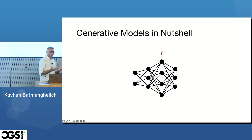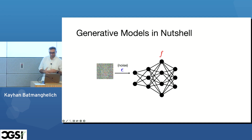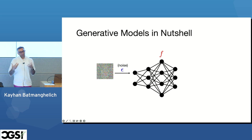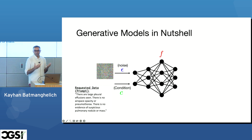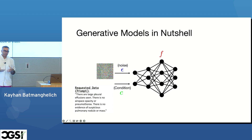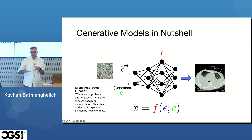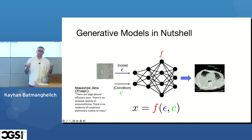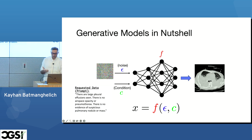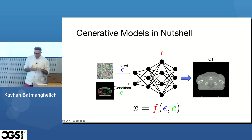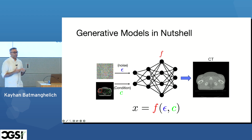I won't go into too much detail about how generative models work, but the overall idea is that you have exogenous noise from some canonical distribution fed into a neural network along with some optional condition — for example, a text prompt. The model synthesizes an image from these inputs. The condition is flexible: it can be a text prompt or another image. For modality imputation, for instance, another image serves as the condition.